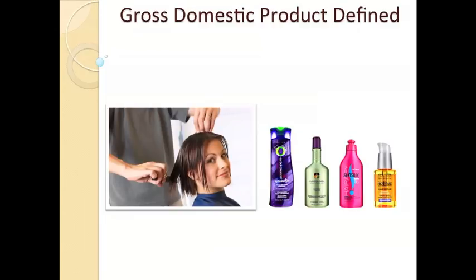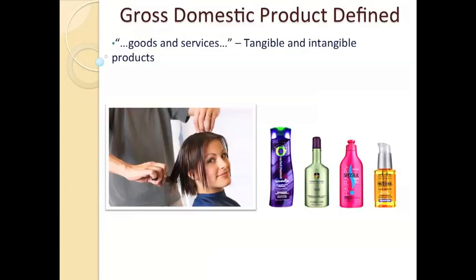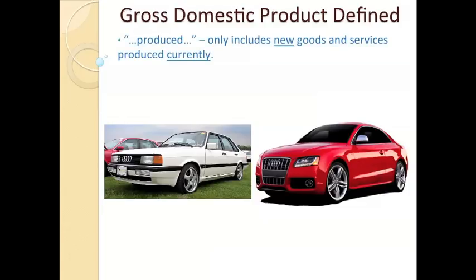The next part of GDP's definition: both goods and services. Goods are tangible — we can touch them — and services are intangible. We count both the hair product, the thing we can touch, and the haircut, the thing that we cannot. GDP also looks at things that are currently produced — brand new items. It disregards the sale of things that have already been sold at previous times. Let's say I have two cars on a car lot: a brand new Audi and a used Audi. Let's assume this Audi was originally sold in 1984. The only sale that would count towards this year's GDP is the 2013 Audi. The used Audi wouldn't count because it's already counted once towards GDP. We don't want to add it again — that would be double counting and skew measurement.